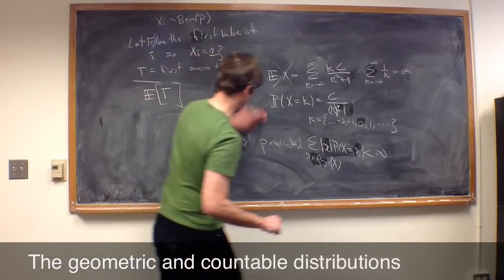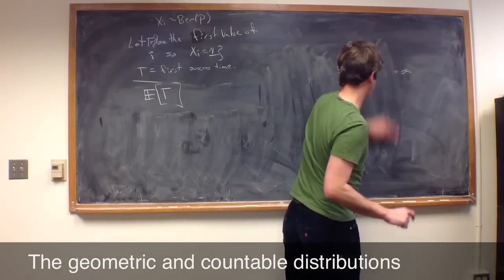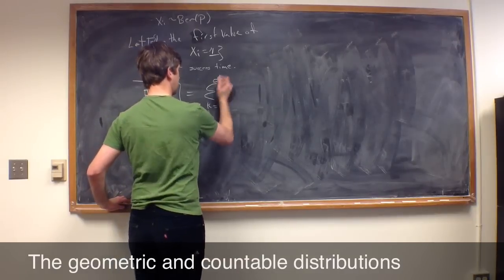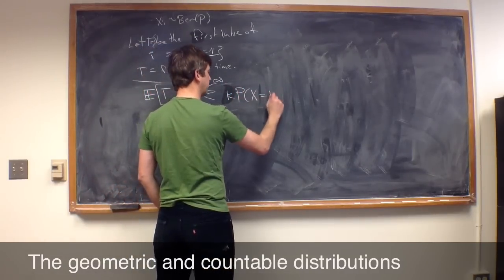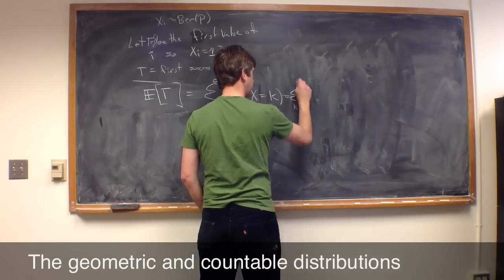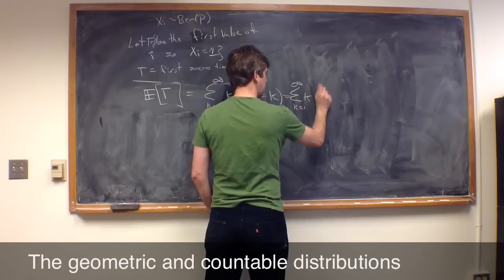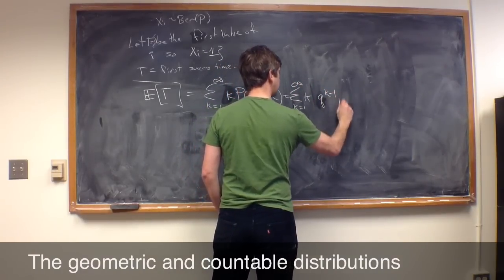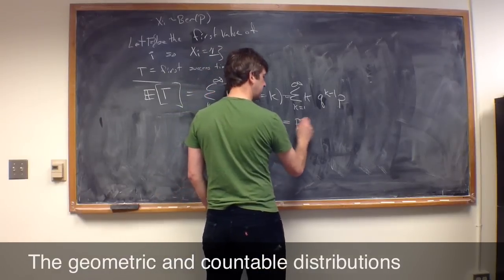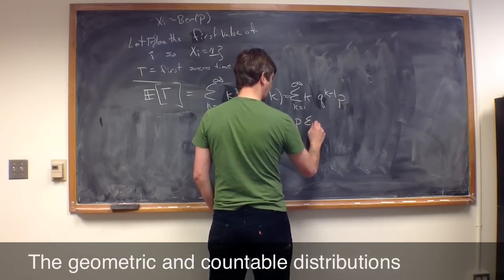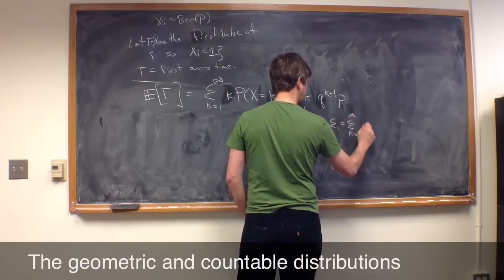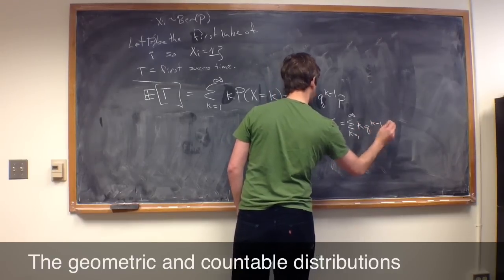Now, let's just do one last thing before we end. Let's calculate the expected value of the geometric random variable. So, a geometric random variable should be the sum K equals 1 to infinity, K times the probability that T equals K. And let's see, K equals 1 to infinity, and this is Q to the K minus 1 times P. So, let's go ahead and just call this P times sigma 1, where sigma 1 is just the sum K equals 1 to infinity, K times Q to K minus 1.